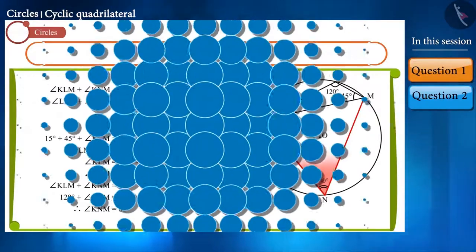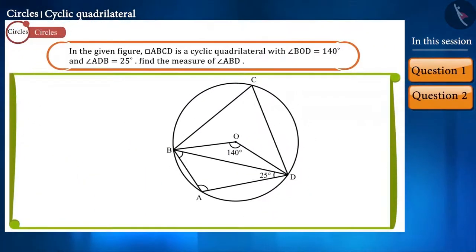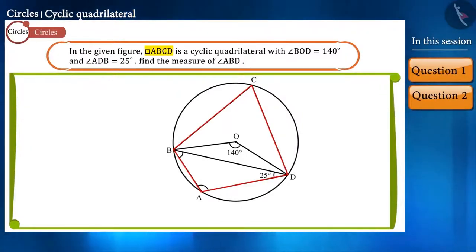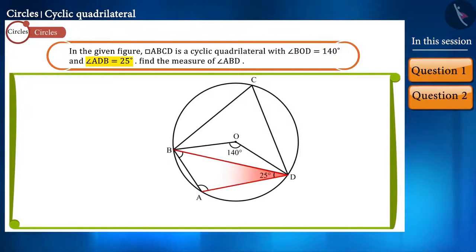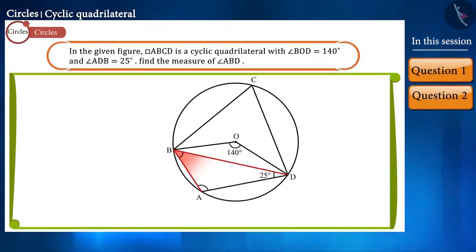Now let's look at our next question. In the given figure, quadrilateral ABCD is a cyclic quadrilateral in which angle BOD is 140 degrees and angle ADB is 25 degrees. Find the value of angle ABD.